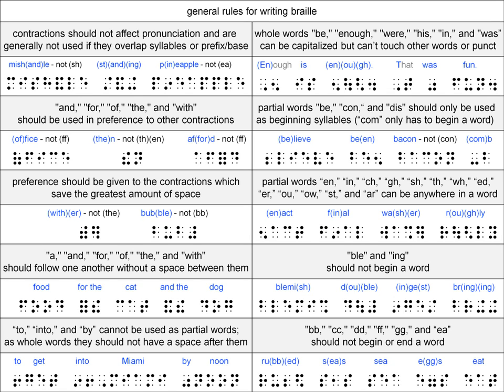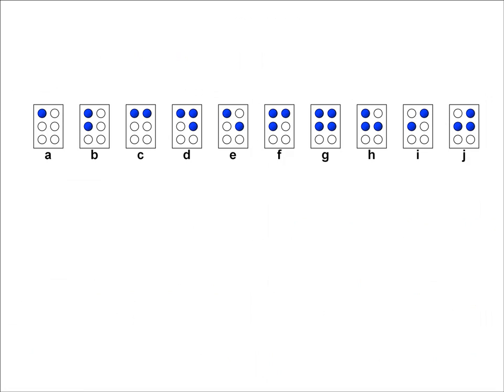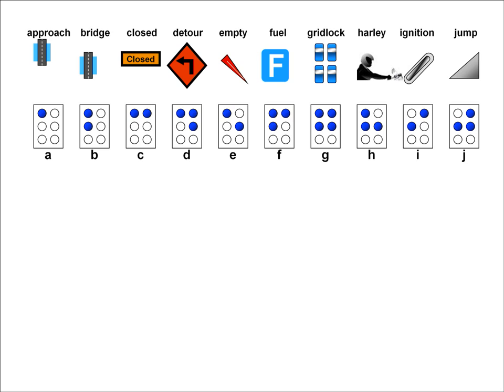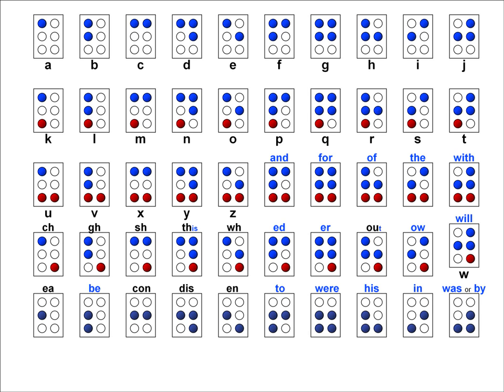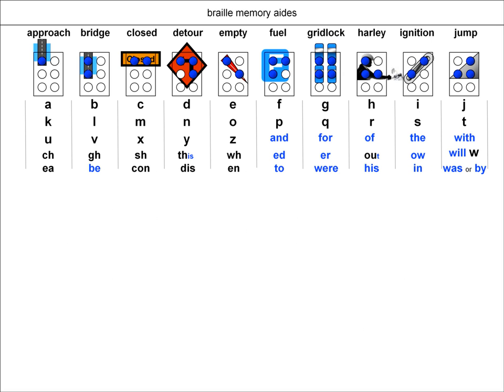But first, to help us with that task, let's quickly review some of the things we have learned in the previous videos so we can put together a cheat sheet to help us study. The first thing we'll put on that cheat sheet is the story about crossing a river that we looked at in the Grade 1 Braille video. We'll place cells A through J on top of the symbols from that story. This will be the first of our Braille memory aids. Now, let's look back at the 50 out of 64 Braille cells that fit the A through J pattern, and note how the additional rows are different than the A through J row.